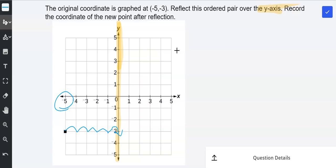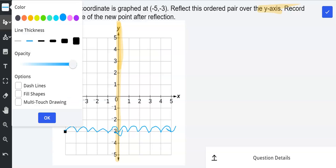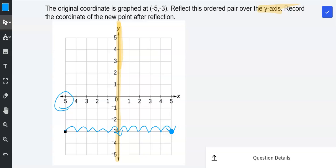Then I count the same distance away from the y-axis: 1, 2, 3, 4, 5. And this is where the new point ends up. The new ordered pair ends up right there.